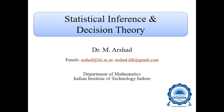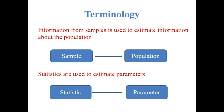In Statistical Inference, we mainly focus on the Estimation Theory, and in Decision Theory, first we will discuss about the Decision Rule and their properties. In statistics, we use some terms like Sample, Population, Statistic, and Parameter.